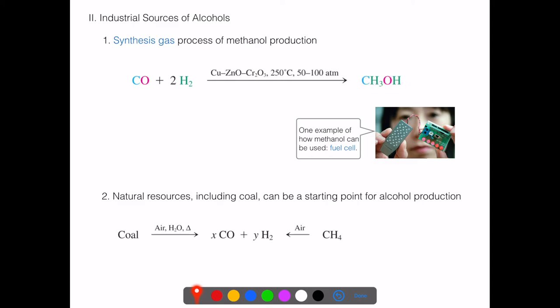The breakdown products of methanol in a fuel cell are simply carbon dioxide and water. Other natural resources can also serve as starting points — coal, in the presence of air, water, and heat, produces carbon dioxide and hydrogen that can feed into the synthesis gas process. Methane — natural gas — in the presence of air also produces this, which can ultimately generate methanol as a liquid fuel source. These industrial sources are what scientists, engineers, and society need to power the future.